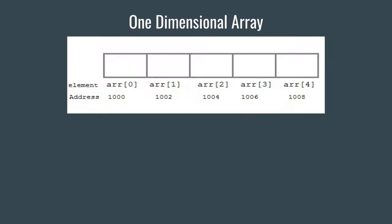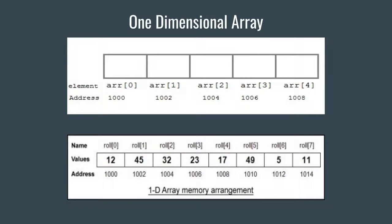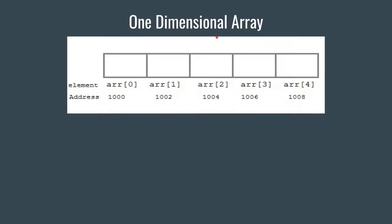Arrays are of two types: the first type is one-dimensional array and the second is two-dimensional array. One-dimensional means nothing but a linear array. We need to understand two things: the element, which is the actual value stored in the array, and the address, which is the location in memory of that value. There is also the indexing of values in an array. For any array, the indexing always starts from zero.